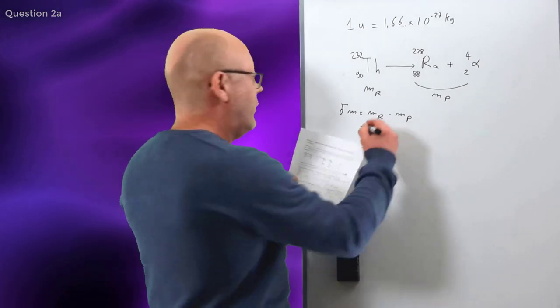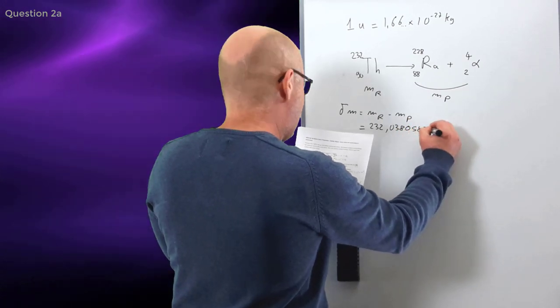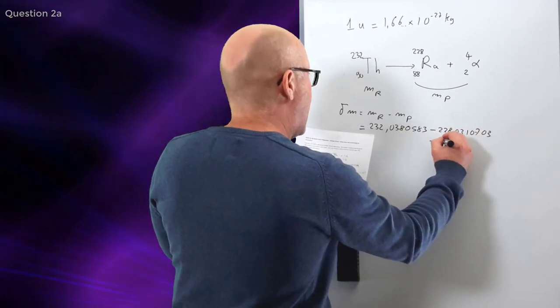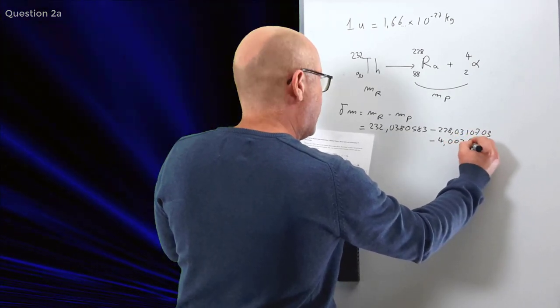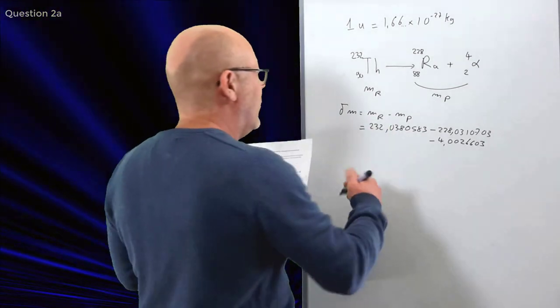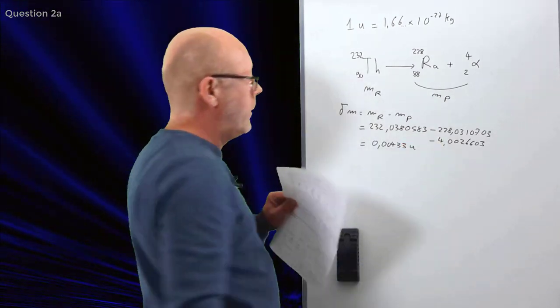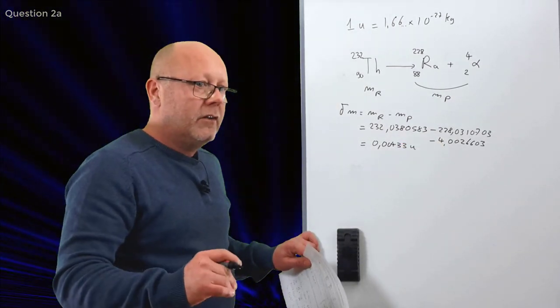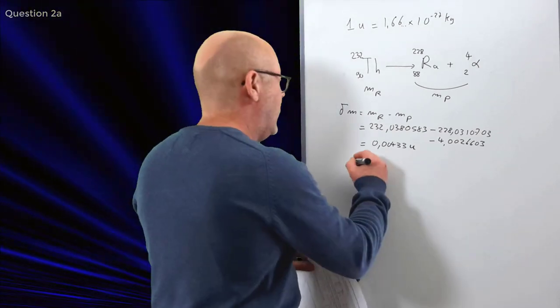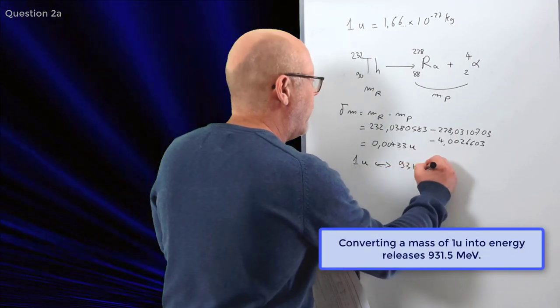Well, we plug in the numbers. Now, be very careful when you plug in the numbers in your calculator. It's easy to make mistakes because there are many decimals. I actually recommend that you write it down on your paper. Just in case you make a mistake in the calculator, the examiner will at least see that you know what you're doing. And I found 0.00433u.